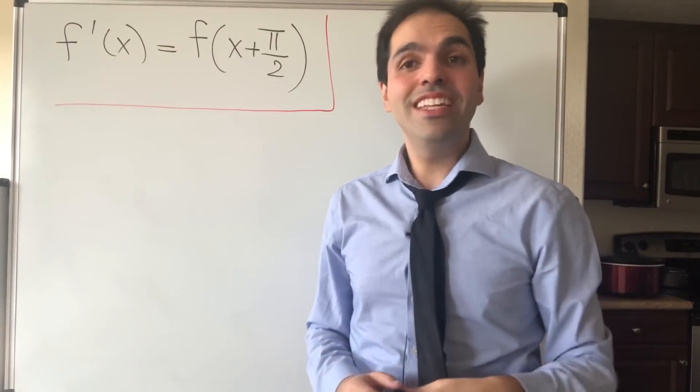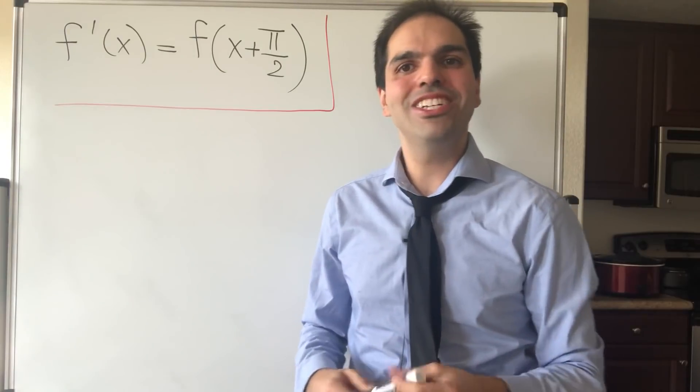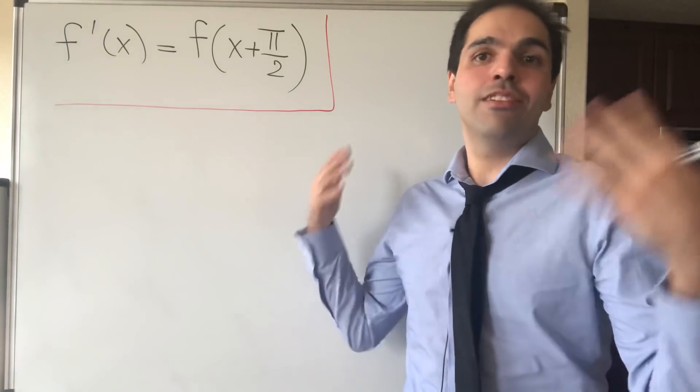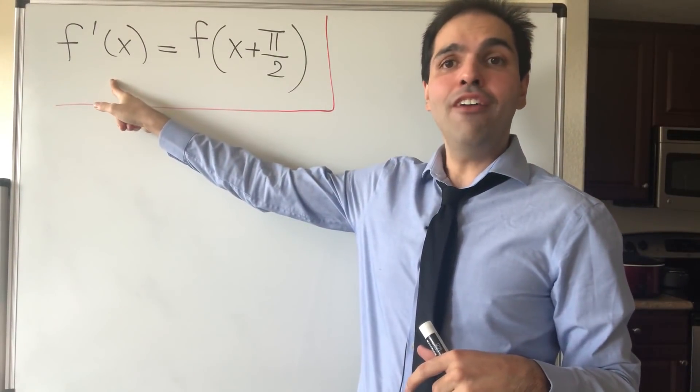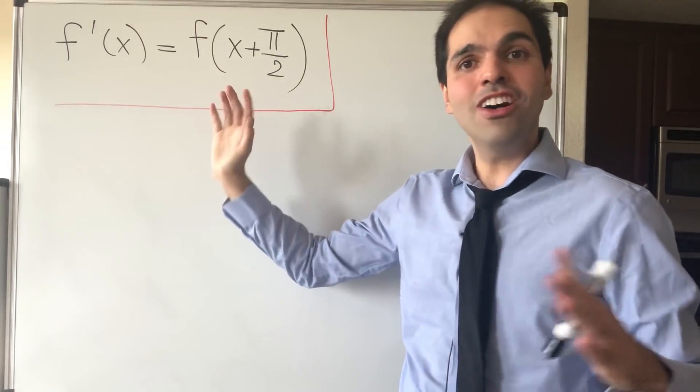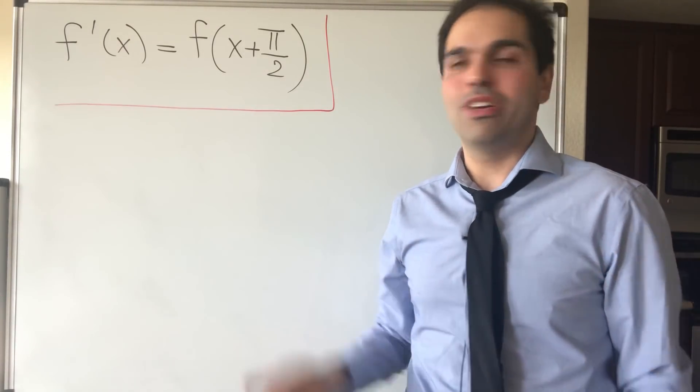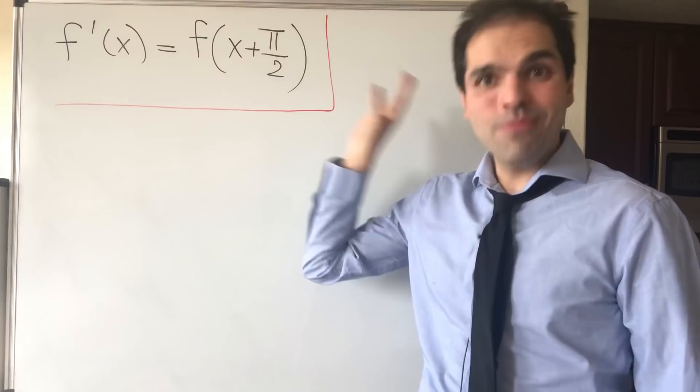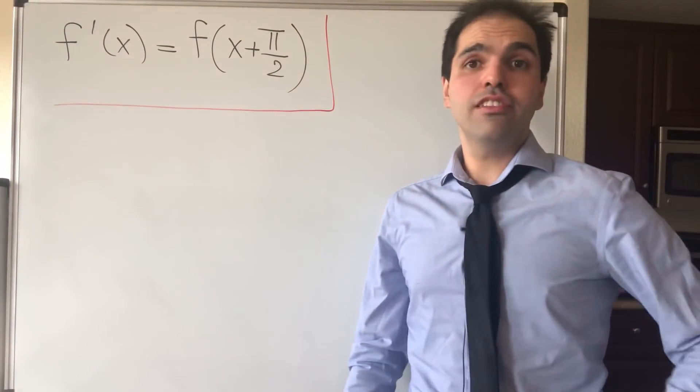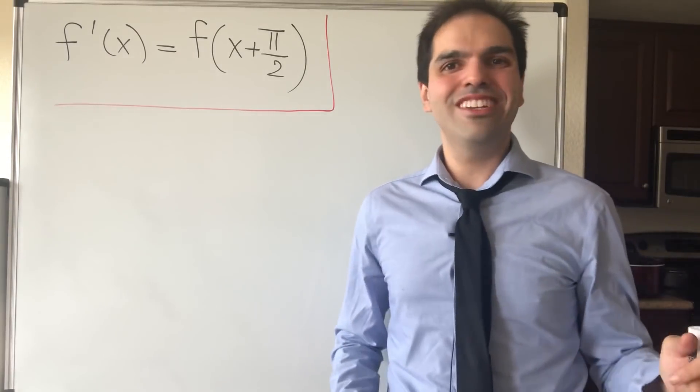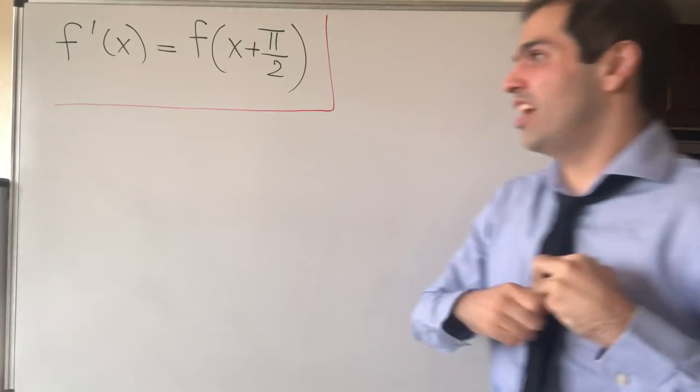All right, thanks for watching. Today I would like to solve what I like to call a shifted differential equation. Namely, find at least some functions f such that the derivative of f equals the function but shifted to the left by π/2 units. So it's not multiply, but it's f of this. And for this, let's just, as usual in differential equations, try to guess some solutions and see if it works or not.